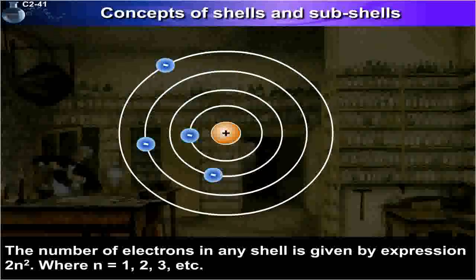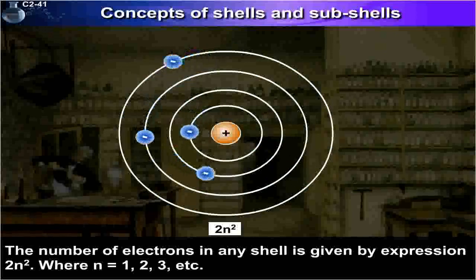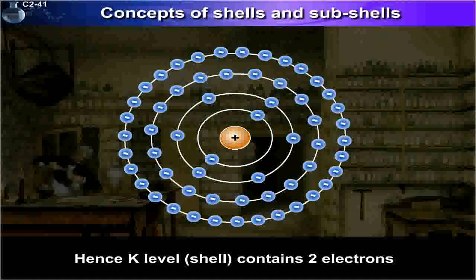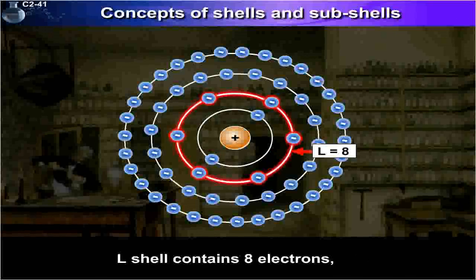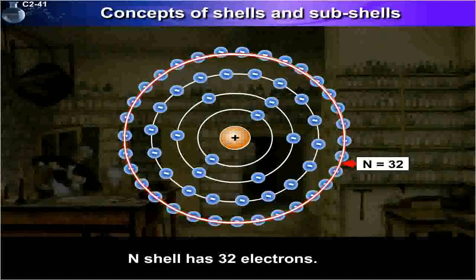The number of electrons in any shell is given by the expression 2N², where N equals 1, 2, 3, etc. Hence, the K shell contains 2 electrons, L shell contains 8 electrons, M shell contains 18 electrons, and N shell has 32 electrons.